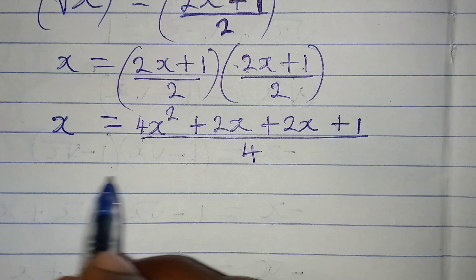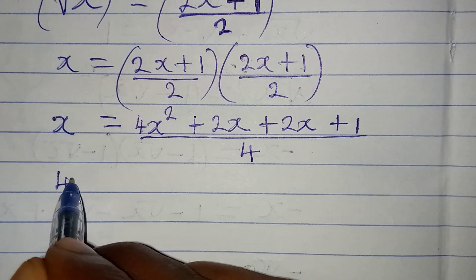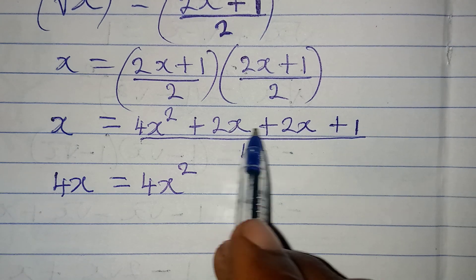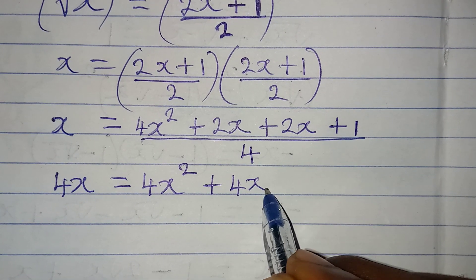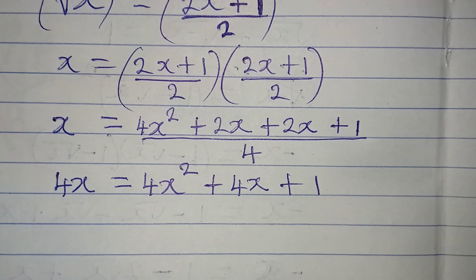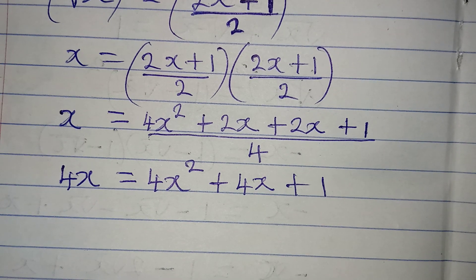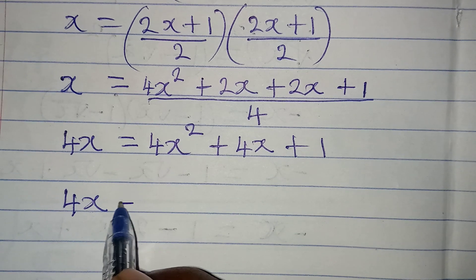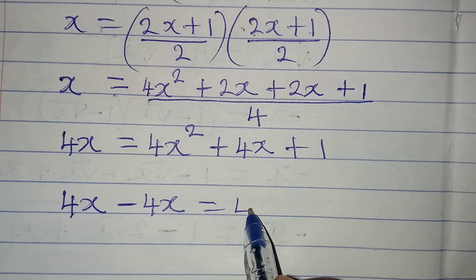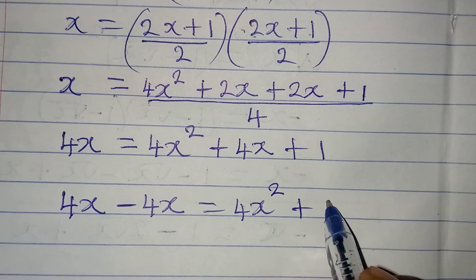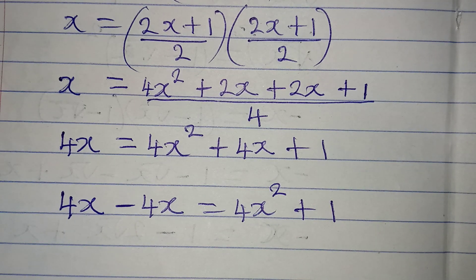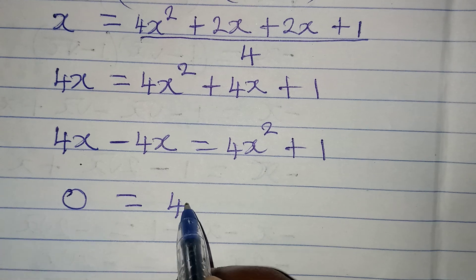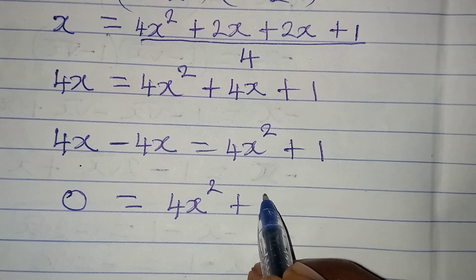Now I cross multiply: 4x = 4x² + 4x + 1. Collecting like terms, 4x moves to the right becoming -4x, so 4x - 4x = 0, giving 0 = 4x² + 1. We now have a quadratic equation.